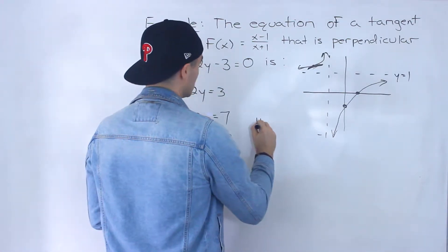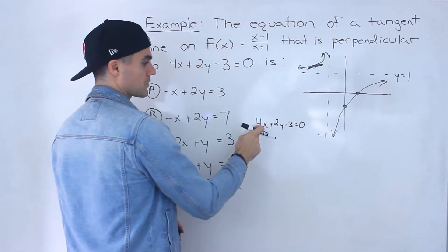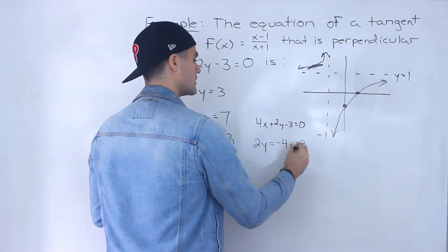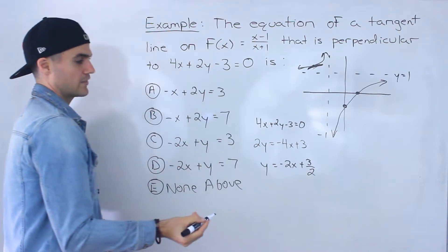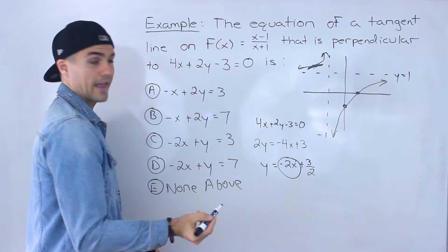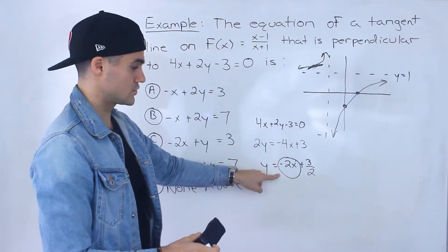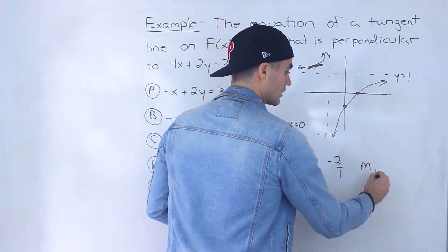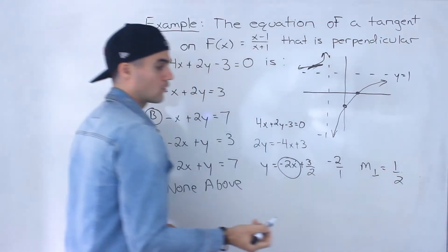If I take the line 4x plus 2y minus 3 equals 0 and put it into y equals mx plus b form: bring the 4x and negative 3 over, so 2y equals negative 4x plus 3, then divide everything by 2. The slope of this line is negative 2, so a perpendicular line is going to have a slope of positive 1 over 2.